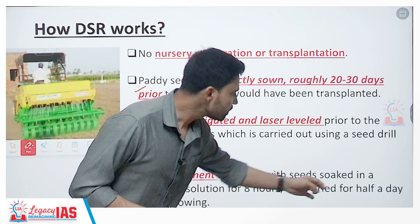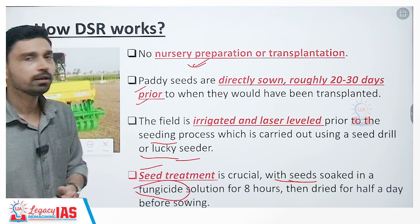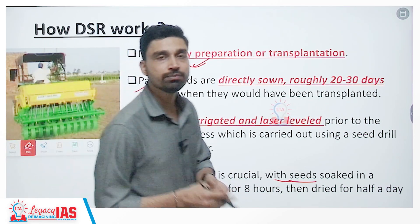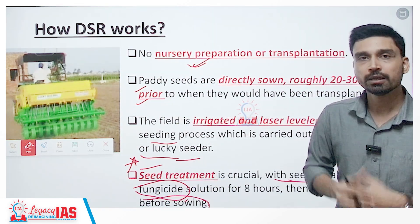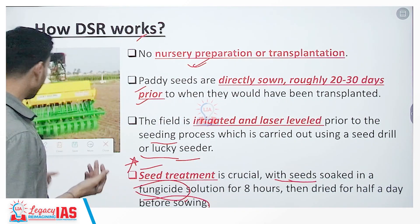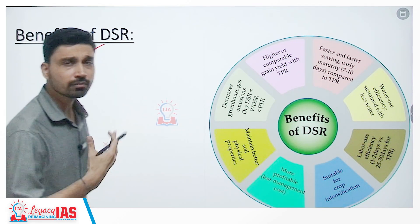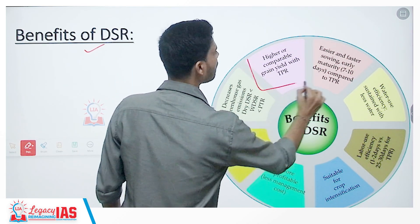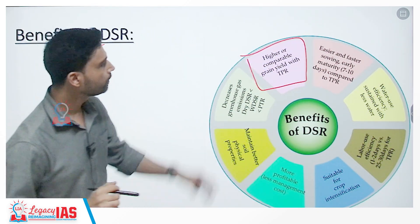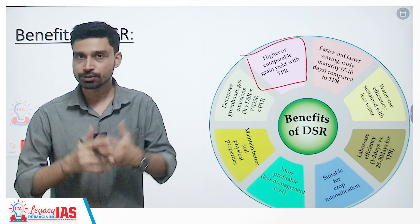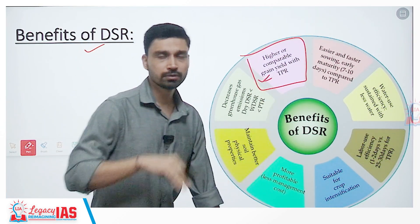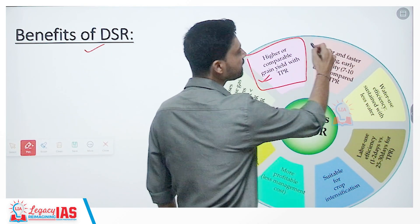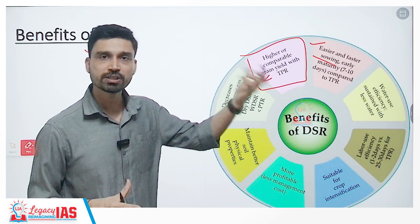Seed treatment is a very crucial stage of direct seeding of rice. The seeds are soaked in a fungi solution for roughly 8 hours and then dried for half a day before sowing. Farmers often face problems here because if seeds are not treated properly, the yield from DSR becomes very low compared to traditional farming. Scientists have claimed that if proper seed treatment and care is done, the grain yield in DSR can actually be higher, or at least comparable to that of traditional rice farming.